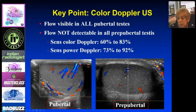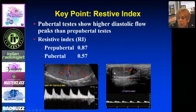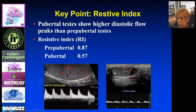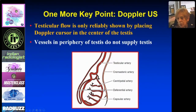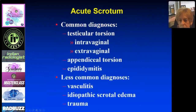In the pre-pubertal testis with pain, if you can't see color flow, all you can do is compare the two sides for echogenicity and size — that's as good as it gets. Regarding resistive index: the pubertal testis has higher diastolic flow peaks than the pre-pubertal testis. The resistive index is higher pre-pubertally due to lower diastolic flow; pubertally it's about 0.57. The key point about Doppler testicular flow is that it's only reliably shown by placing the Doppler cursor in the center of the testis — you must document flow in the center, not just the periphery.